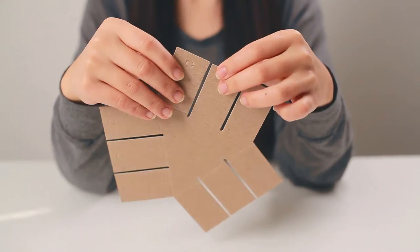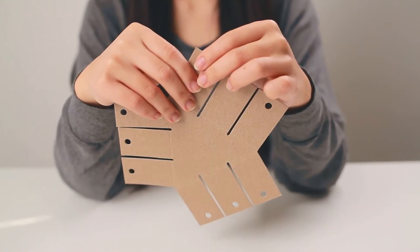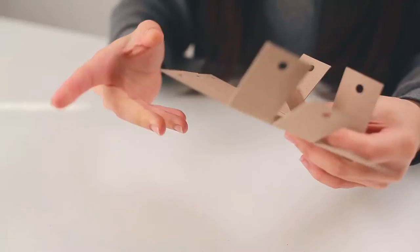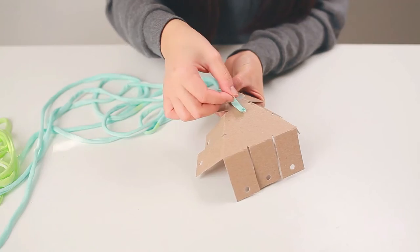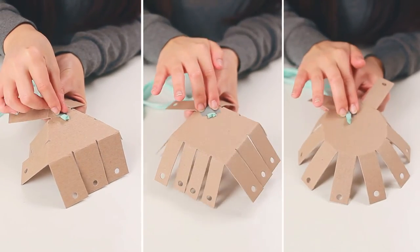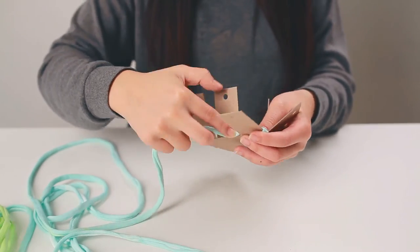Take your basket weaving frame and then punch out all the holes. Then fold the flaps in. Find one end of your yarn and then tape it to the bottom of your frame. Start weaving in and out of the tabs.